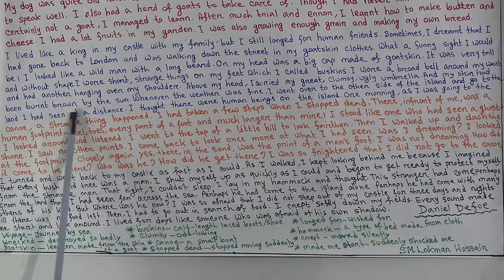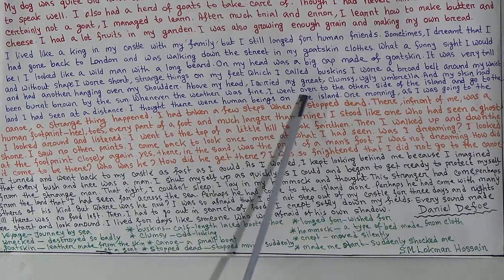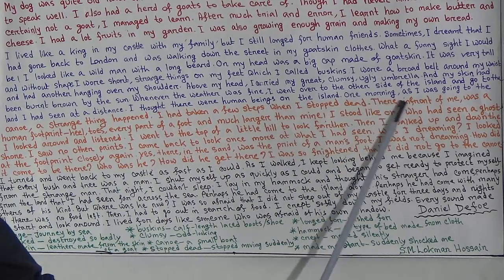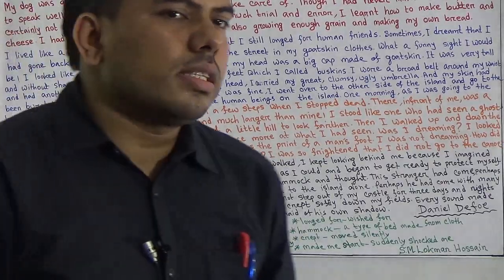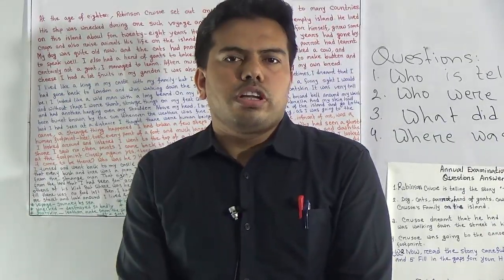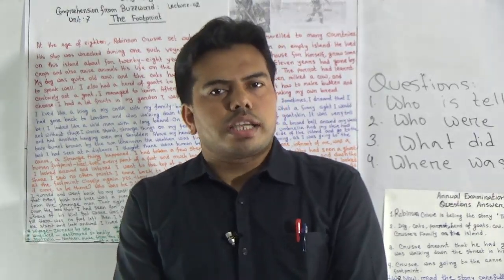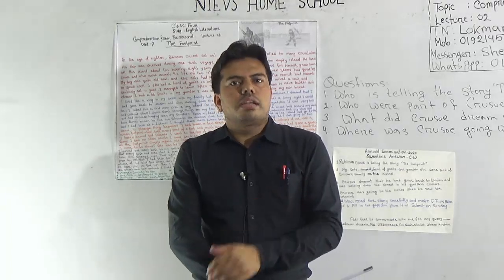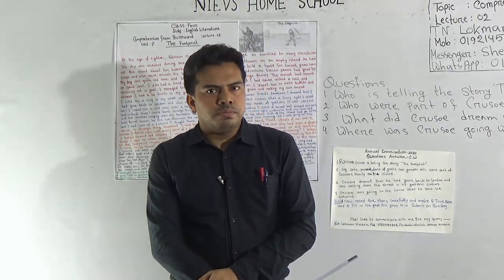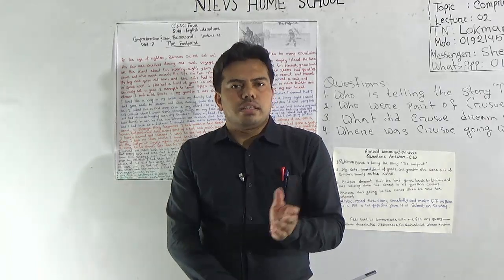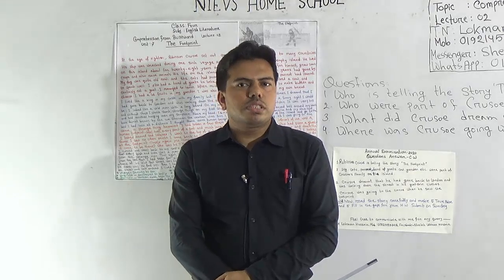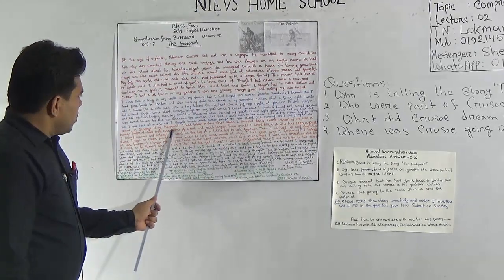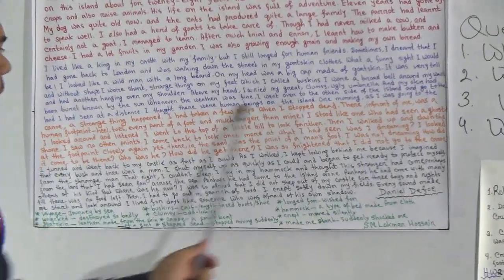'My skin had been burnt brown by the sun. Whenever the weather was fine I went over to the other side of the island. I thought there were human beings on the island.' One morning as he was going to the canal, a strange thing happened. He had no proper dress like a human being so he managed all types of leather, buskins, and goatskins to make himself presentable. One day he faced signs of cannibals — after getting the cannibal's markings in the land, he was very frightened.